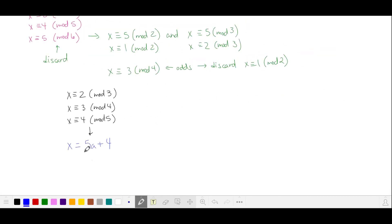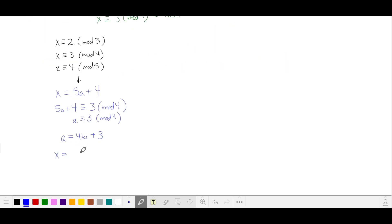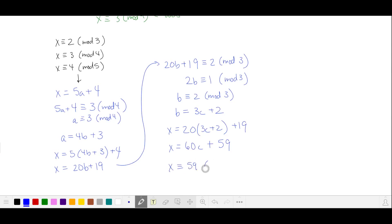Let's start with the last one. x is four more than a multiple of five. a is three more than a multiple of four. Plugging into x, x is 20b plus 19, which is two mod three. So b is two mod three. And we plug in for x. Our solution for case three is 59 mod 60.